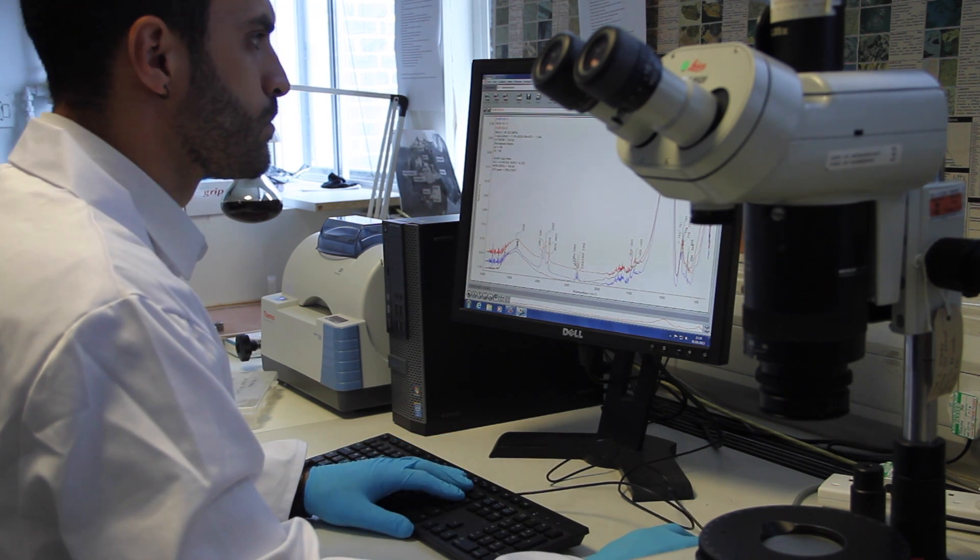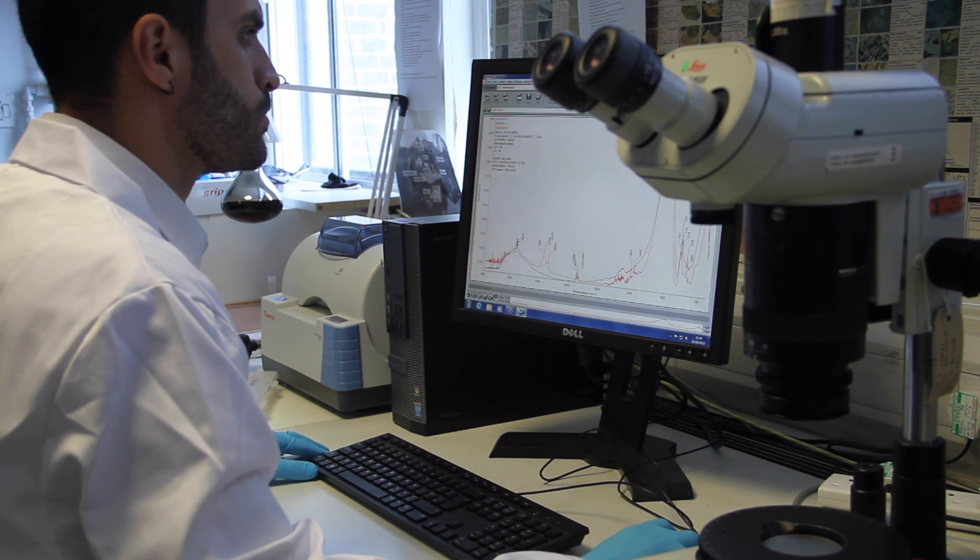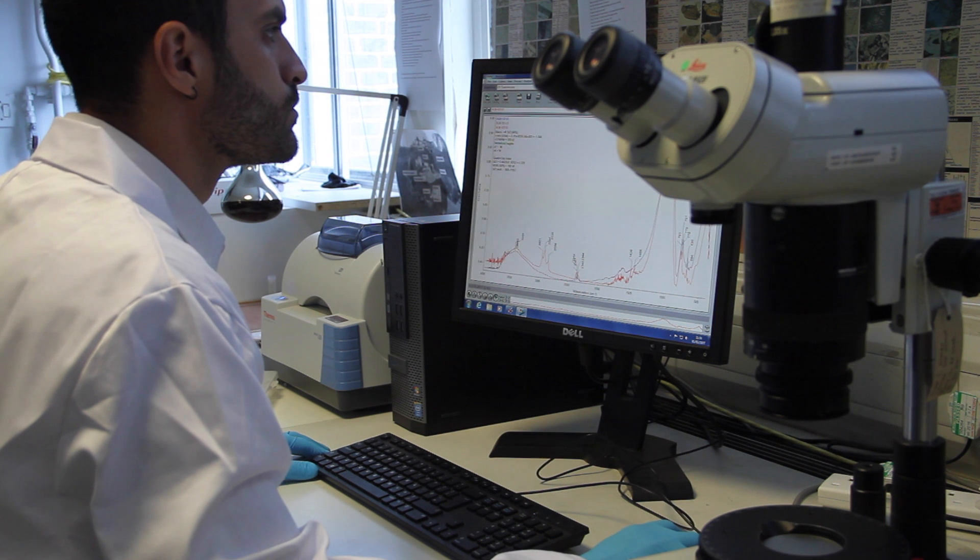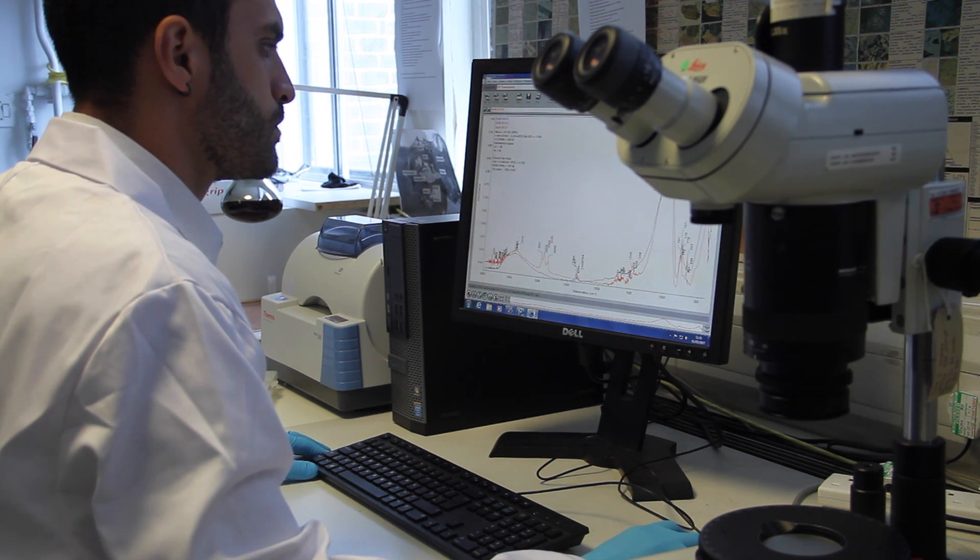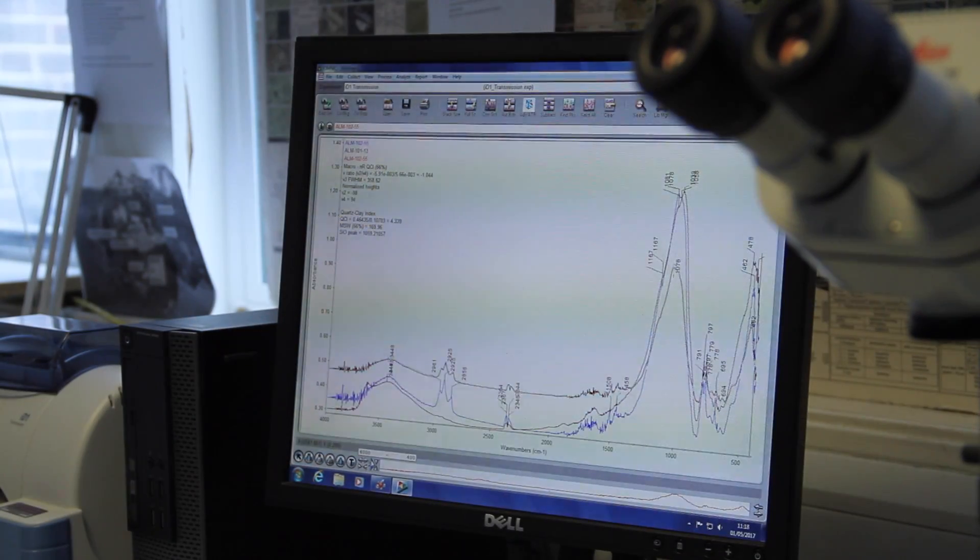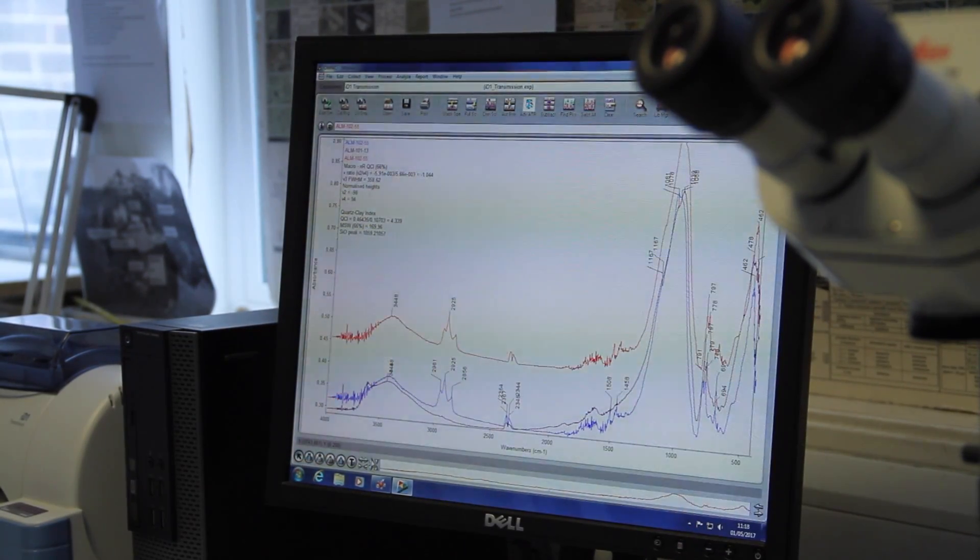These include thin-section ceramic petrography, X-ray diffraction, FTIR spectroscopy and X-ray fluorescence petrography. Thin-section petrography is one of the main techniques for understanding manufacturing processes and provenance.